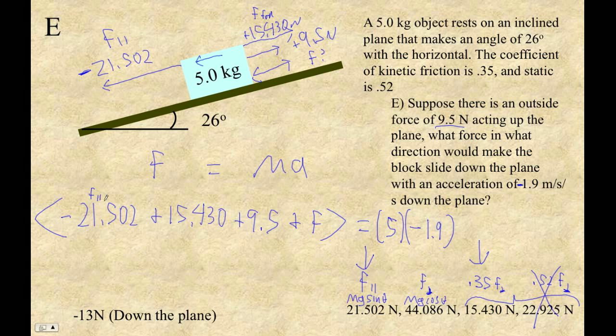Parallel force, always down the plane. Friction force, since we're sliding down the plane, is up the plane. Yeah, that's right. 9.5 was up the plane, so it's positive. Unknown forces, we always make positive and let them become negative. M times A. M is, that's easy. A is down the plane.